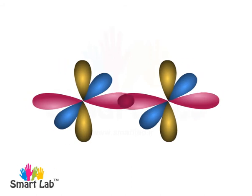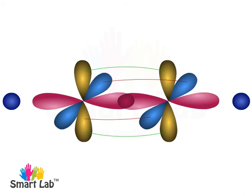The unhybridized 2py and 2pz orbitals on each carbon atom overlap sideways to form two pi bonds. The remaining two SP hybrid orbitals overlap with the 1s orbitals of two hydrogen atoms.